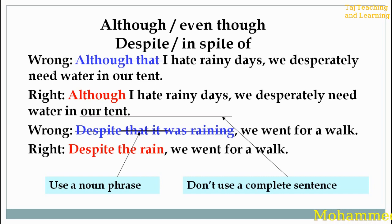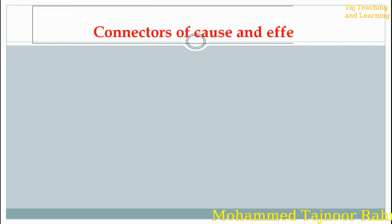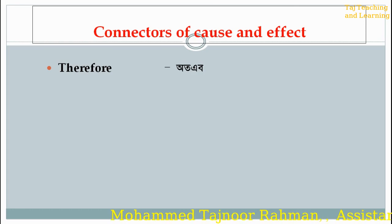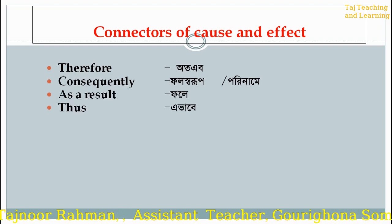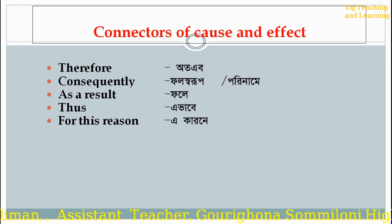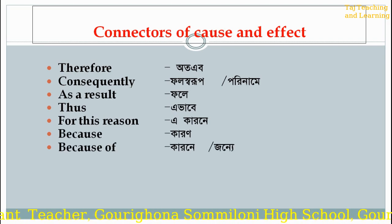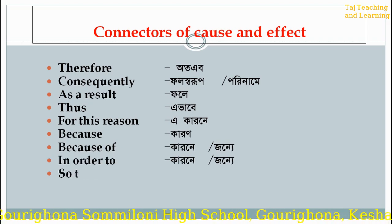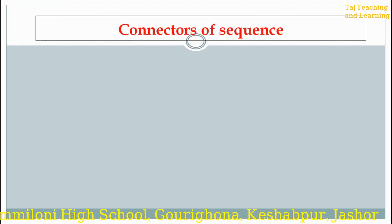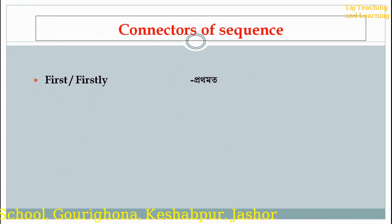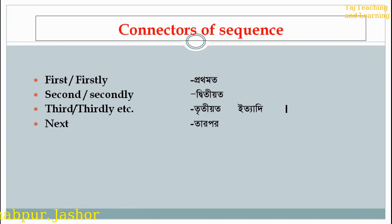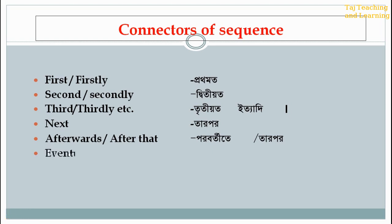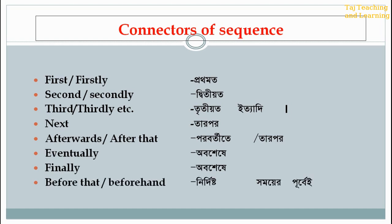Here, use a noun phrase — don't use a complete sentence. Connectors of Cause and Effect: therefore, consequently, as a result, following, for this reason, because, because of, in order to, so that. Connectors of Sequence: first, firstly, second, secondly, third, next, after that, eventually, finally, therefore, beforehand.